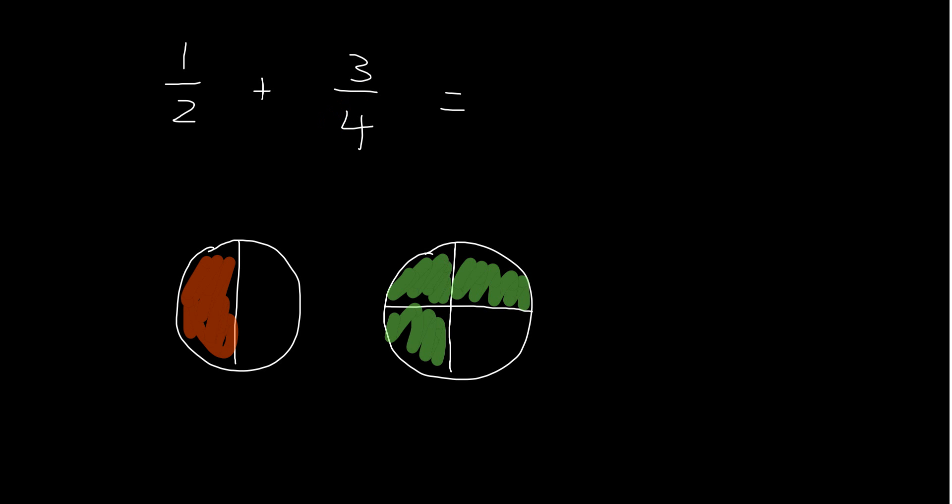So the first thing we notice is we have 1 half is shaded like this and 3 quarters is shaded like this. But they're different sizes so we need to think of a way to solve this problem. And what we're going to do is we're going to divide them all into quarters. So I can't just add a half and 3 quarters. But I'm going to divide my half like this into 2 quarters. Aha!